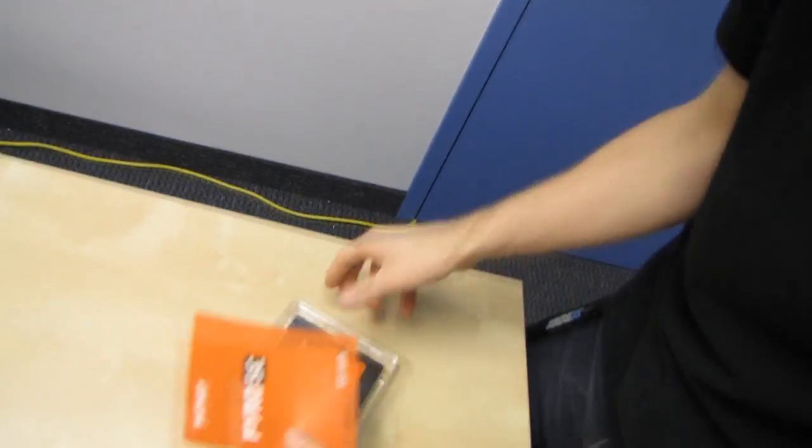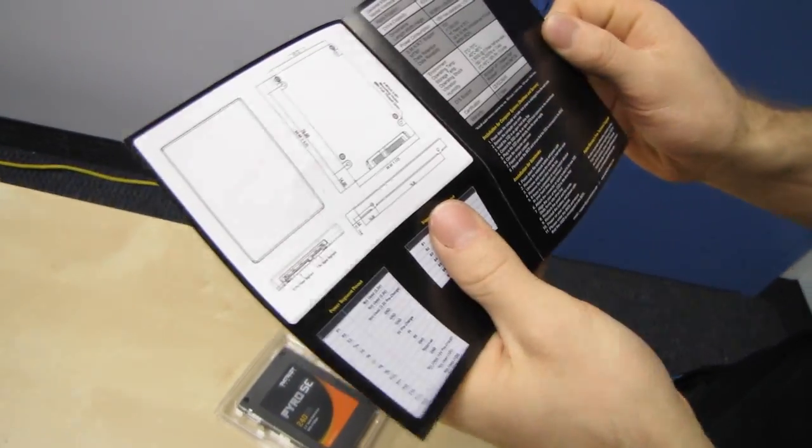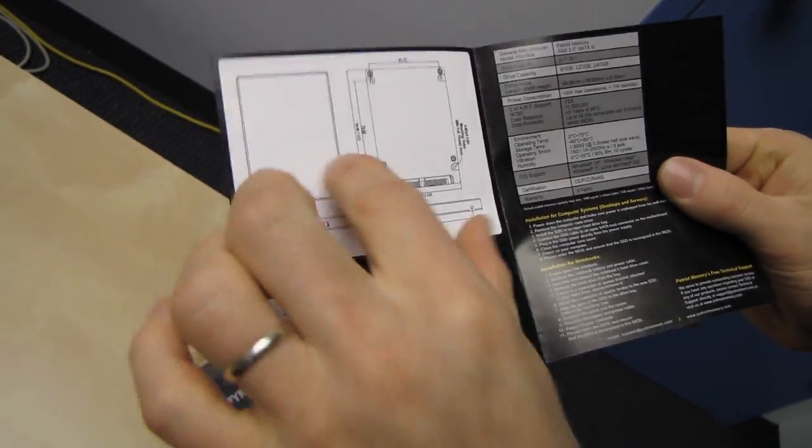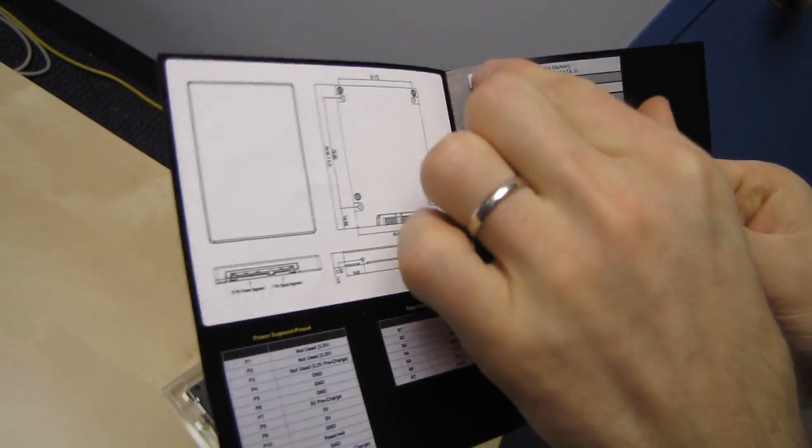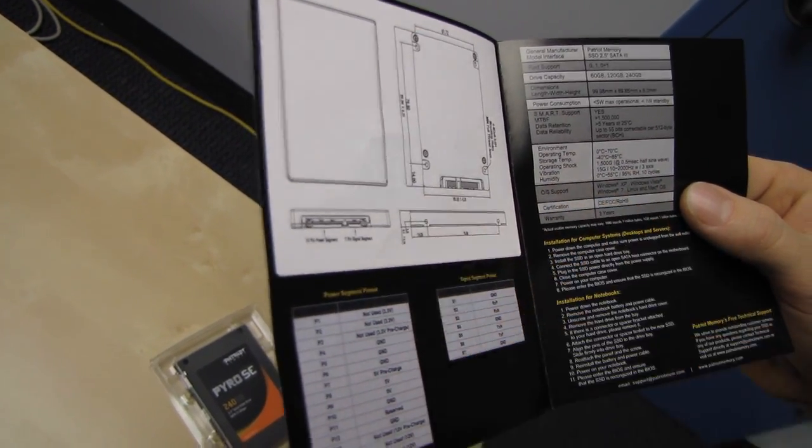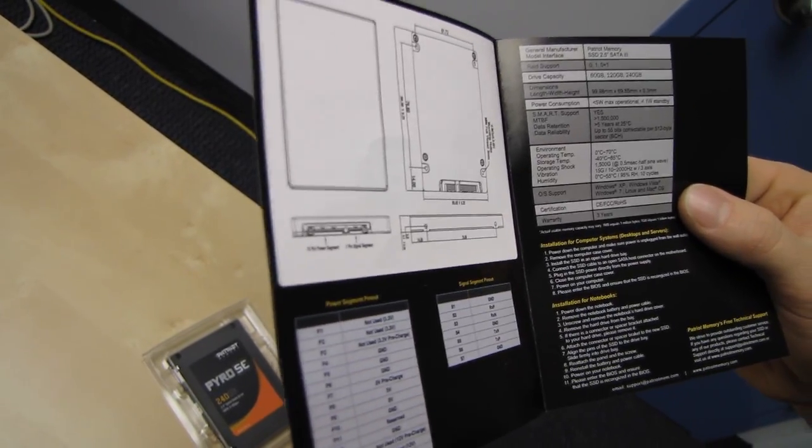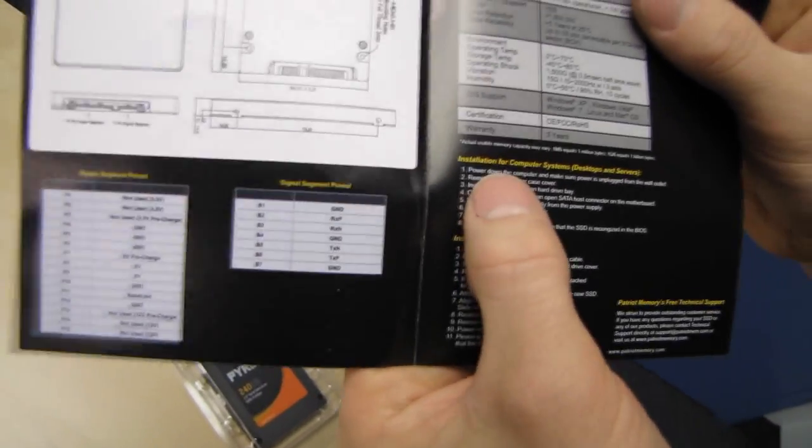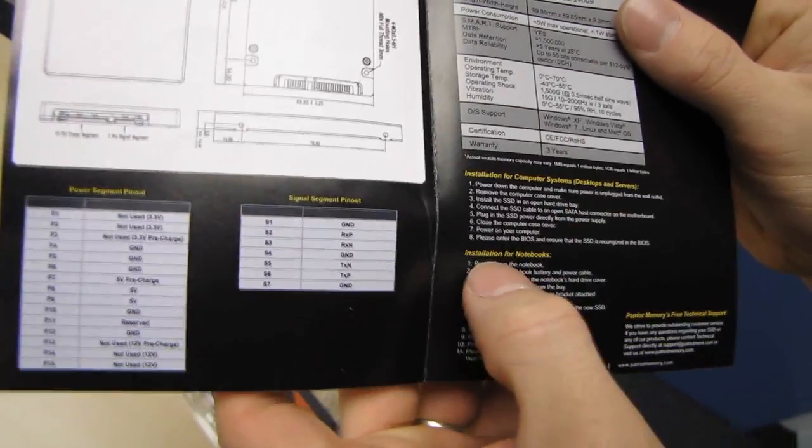Let's see what else we got in here. We got a little booklet which shows specs of the drive, some different specs. I think these are quite generic. Installation instructions for computer systems, desktops and servers, and installation instructions for notebooks.